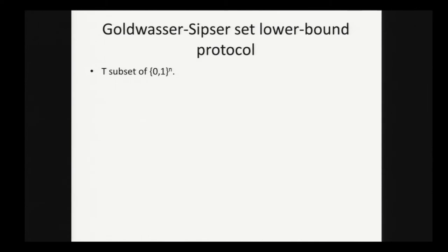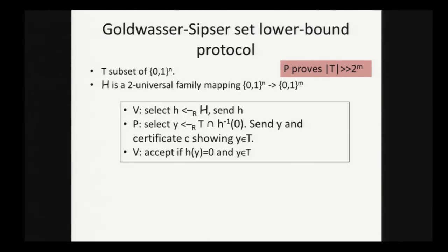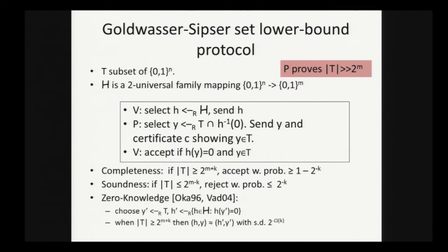Let's recall the Goldwasser-Sipser set lower bound protocol. You have a t subset of 0,1 to the n. The prover wants to prove that t is large, much larger than 2 to the m for m less than n. We're going to use a pairwise independent hash family. The verifier selects uniformly a hash function from the family, sends it to the prover. The prover finds a y in the set t such that h of y equals 0, sends y and a certificate showing that it's in the set, and the verifier accepts if these conditions hold. This has been previously analyzed to have completeness, soundness properties, and even a statistical zero knowledge property. But the simulation absolutely requires that the verifier is able to sample uniformly t, and that is going to pose a problem for us in the physical case.